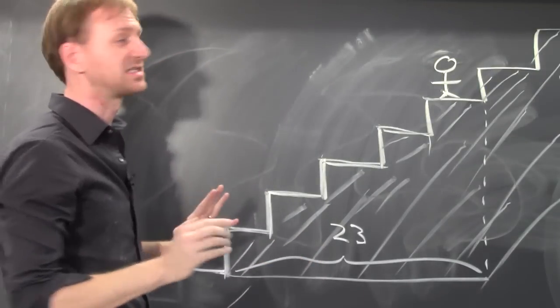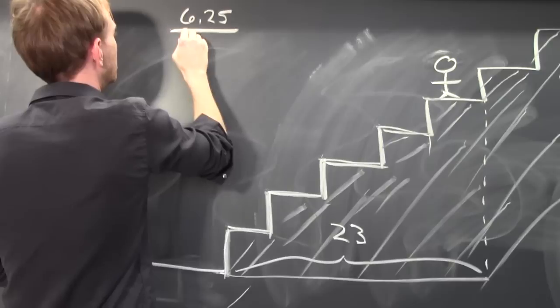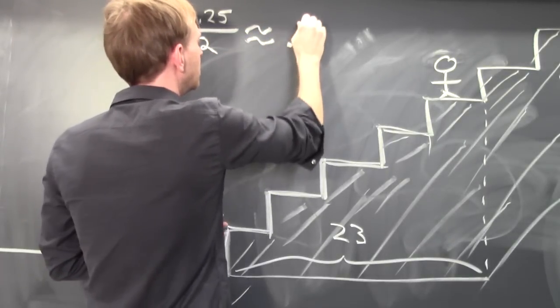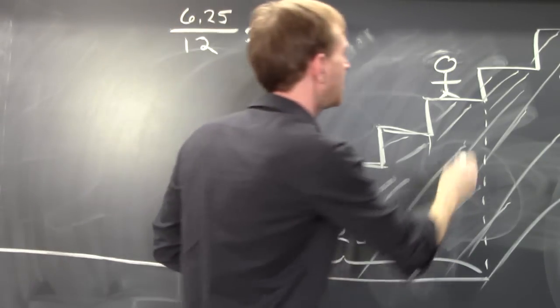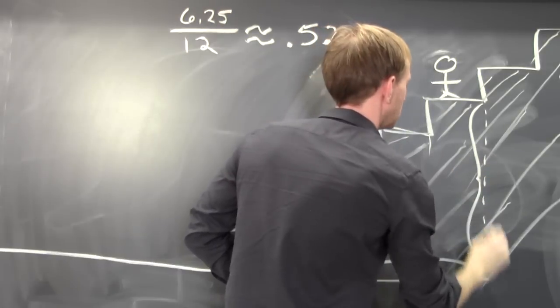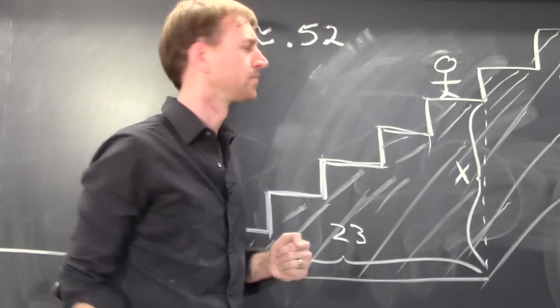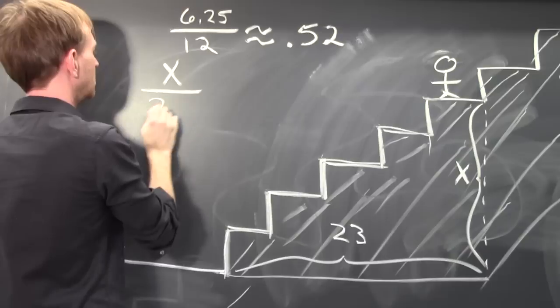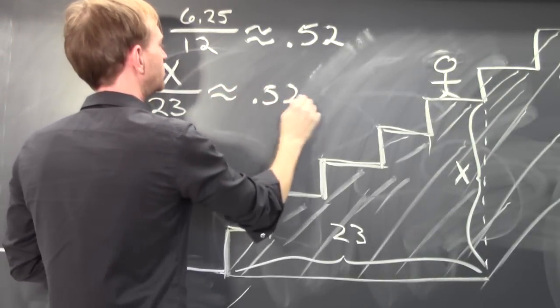So if you remember, the slope of the staircase was 6.25 over 12, which is approximately .52. We want to know this height, x. So we want x over 23 to be approximately .52.